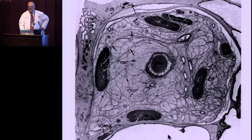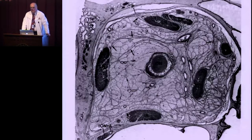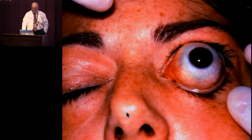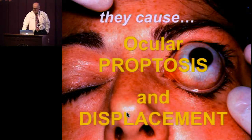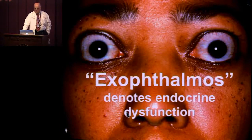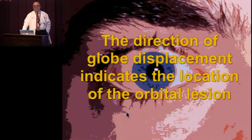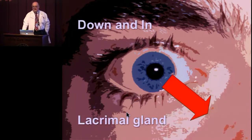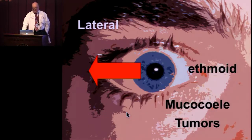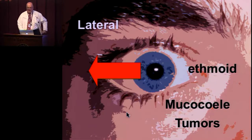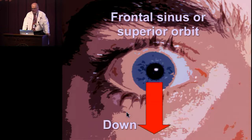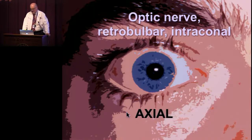This is a cross-section of the orbit showing the fascial planes. A man in Europe named Corneif did very interesting dissections and demonstrated these a few years ago. Most orbital lesions are space-occupying and cause ocular proptosis or displacement. The term exophthalmos generally implies endocrine dysfunction. The direction of globe displacement indicates the location of orbital lesions — lacrimal gland lesions push the eye down and in, ethmoid lesions push the eye laterally, maxillary lesions push it up, and frontal sinus or superior orbit lesions push it down.